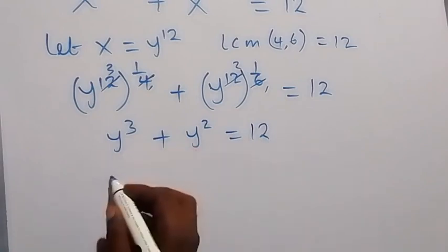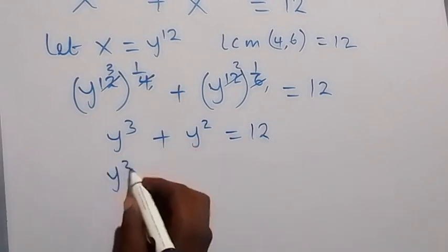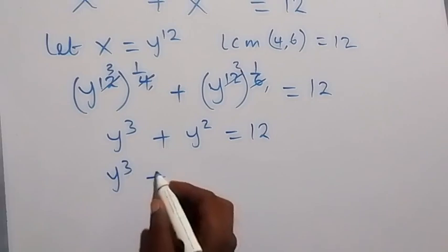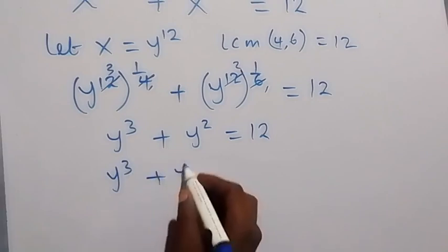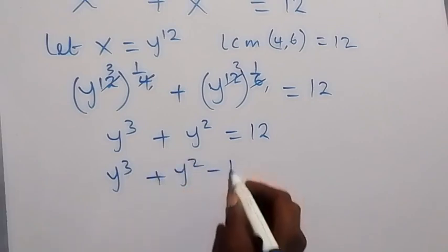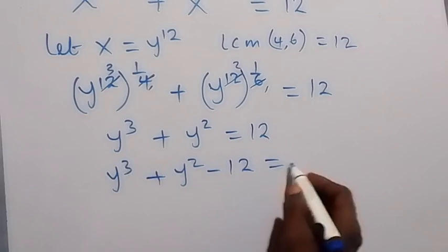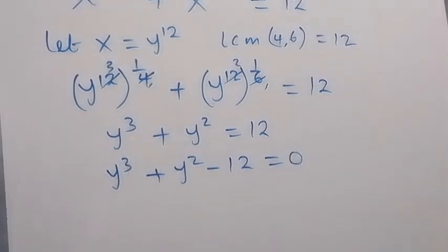Taking 12 to the other side, we have y cubed plus y squared minus 12, which equals 0.